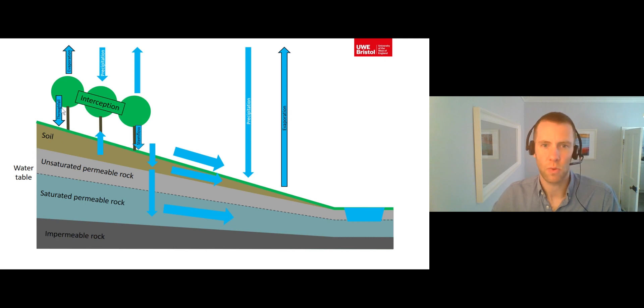Throughfall is where water drips to the ground from the vegetation leaves and branches, and stem flow is where the water flows down the branches and trunk of vegetation to reach the ground.